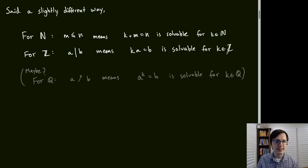While preparing this lecture I thought: if the integers add negatives and the rationals add reciprocals, there could be another relation based on whether a particular exponential equation is solvable.